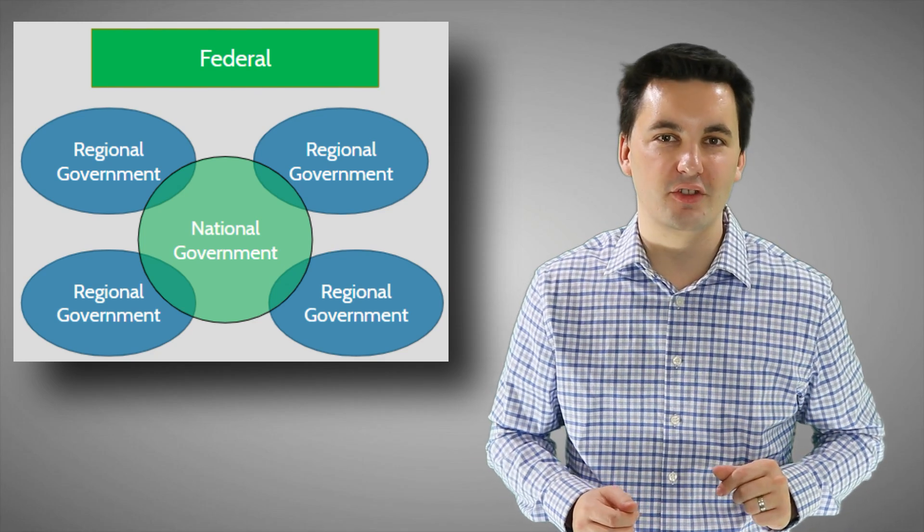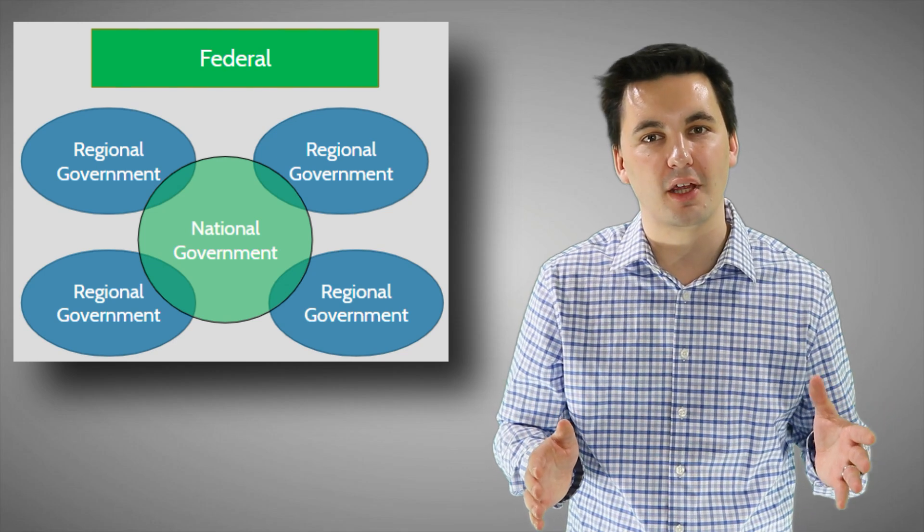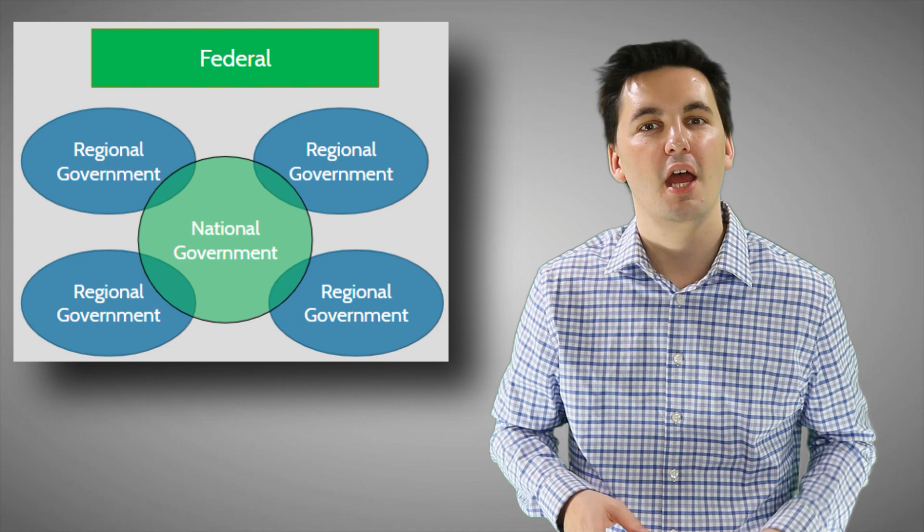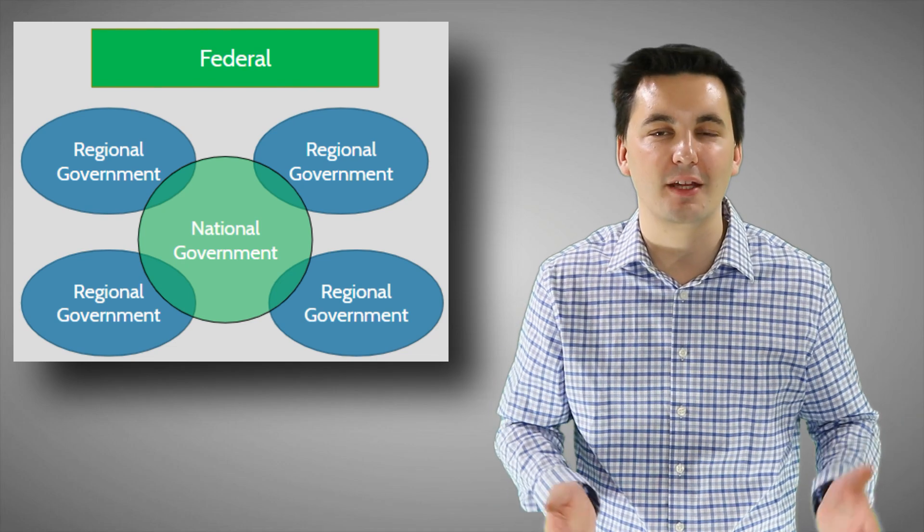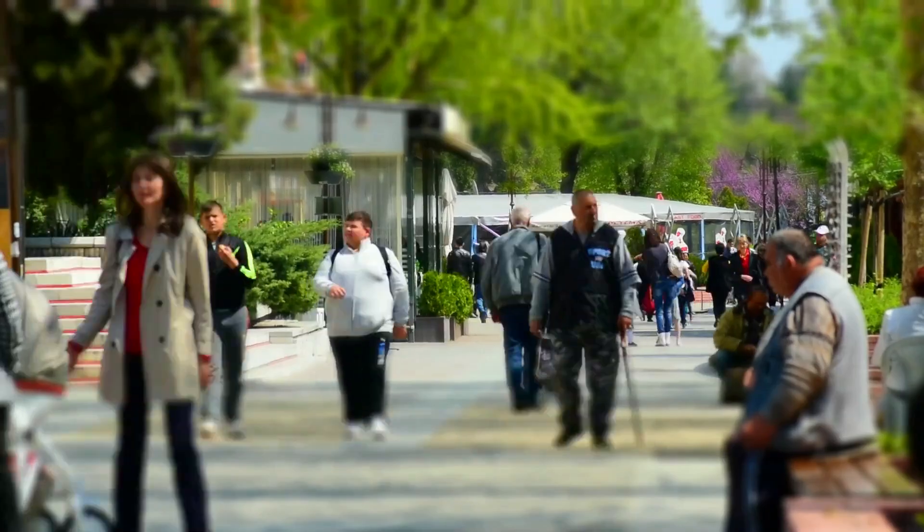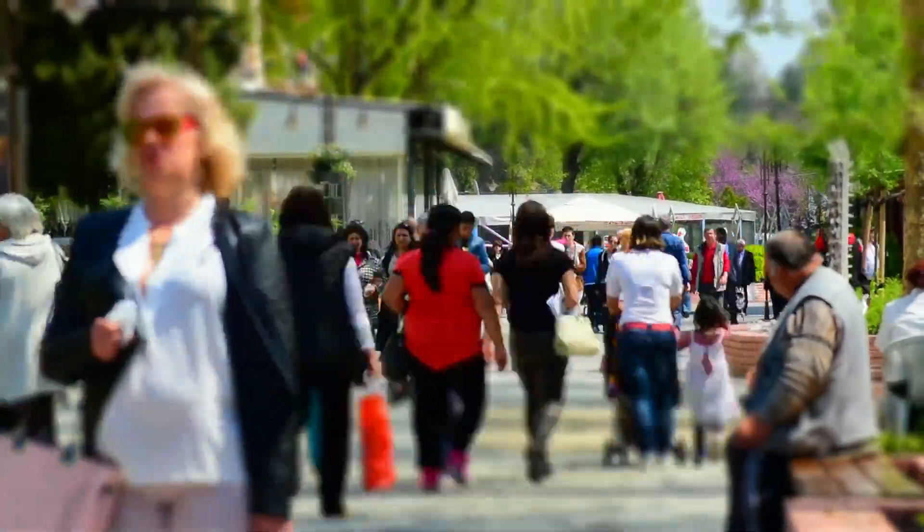States that often use a federal system are often ones that are multinational, or states that have a larger population, or a population that stretches over a large geographic area. The benefit of having a federal state is that decisions can be made at the local level. Regional governments are allowed to pass laws and policies that reflect the day-to-day needs of the people living in their region.